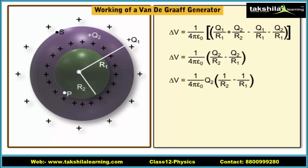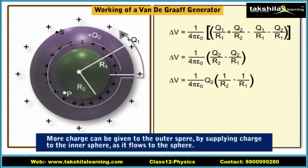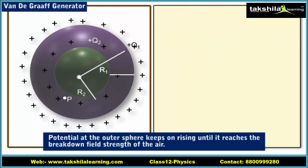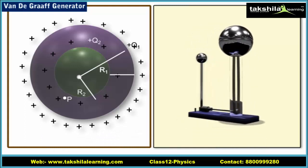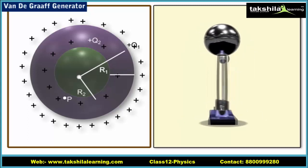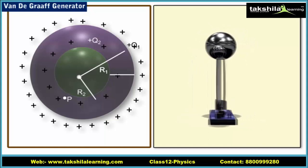If we now connect the inner sphere to the outer sphere, charge flows from the inner sphere to the outer sphere since the inner sphere is at a greater potential as compared to the outer sphere. Therefore, we can keep on adding charge to the outer sphere by supplying charge to the inner sphere as it flows from the inner sphere to the outer sphere. The potential at the outer sphere keeps on rising till it reaches the breakdown field strength of air, when it starts leaking off to the air. Due to the small charged sphere within the large sphere, we can keep piling up larger and larger amounts of charge on the latter. This is the principle of the Van de Graaff generator.